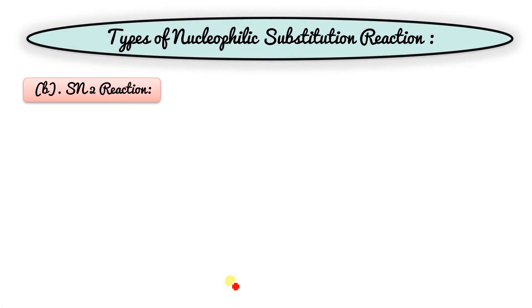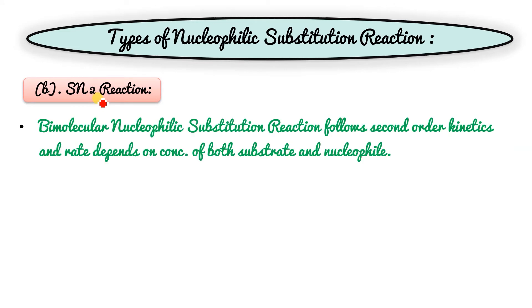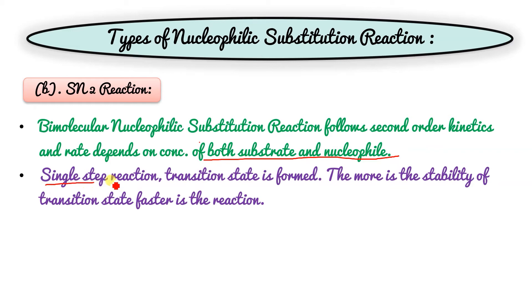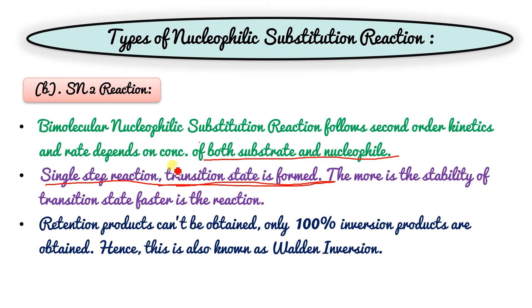In SN2, the rate of reaction depends on both the substrate and the nucleophile. It is a single-step reaction where a transition state is formed — no carbocation. The more stable the transition state, the faster the reaction. Since no carbocation is generated, the nucleophile cannot attack from the front, and hence only inversion product is possible — 100% inversion.